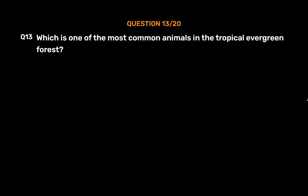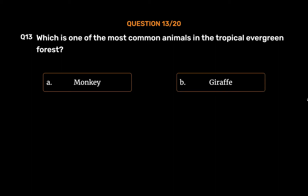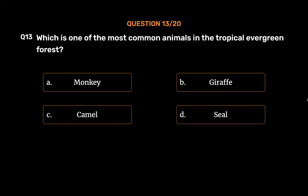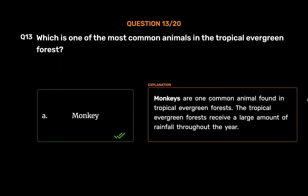Question number 13: Which is one of the most common animals in the tropical evergreen forest? Option A: Monkey. Option B: Giraffe. Option C: Camel. Option D: Seal. The correct answer is Option A: Monkey. Monkeys are one common animal found in tropical evergreen forests. The tropical evergreen forests receive a large amount of rainfall throughout the year.